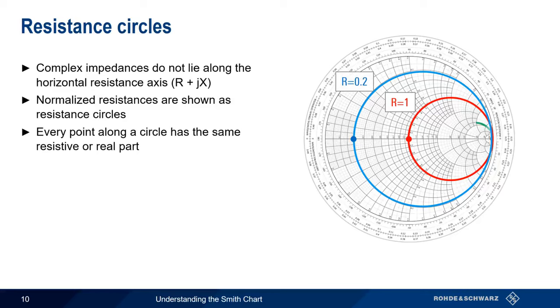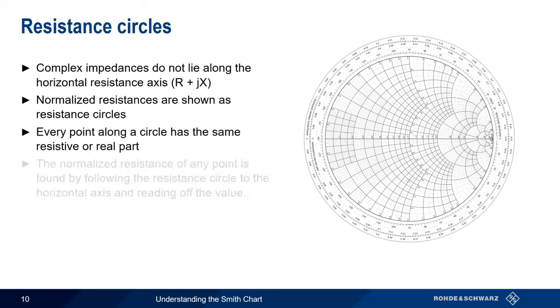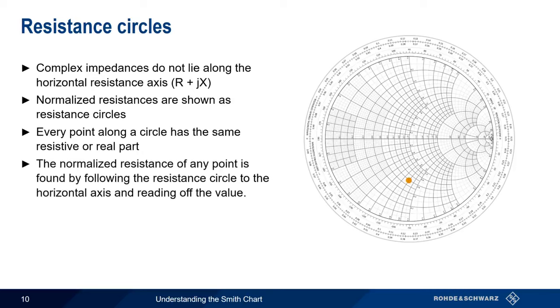The same is true if the circle passes through the point 4 on the resistance axis. Every impedance that lies on this circle will have a real part, R, equal to 4. For any point on the Smith Chart, we can determine its resistive part by simply following the corresponding resistance circle until it intercepts the horizontal resistance axis, and then reading off the value.